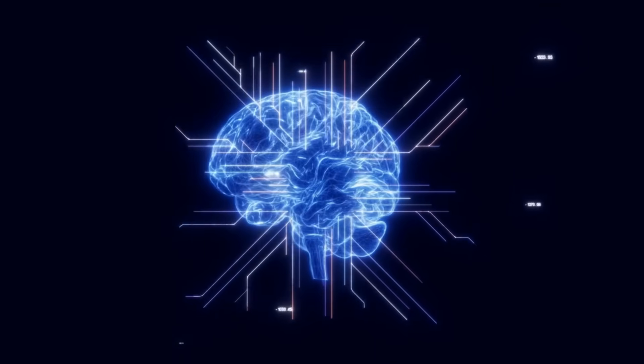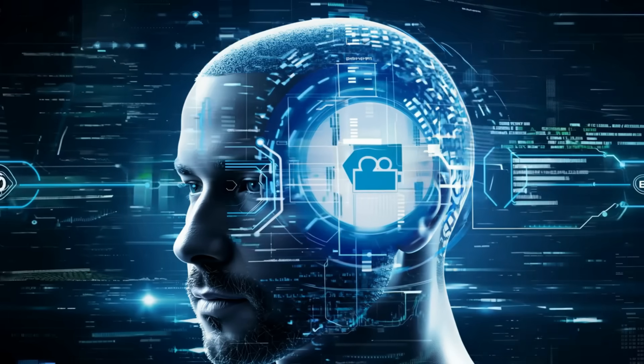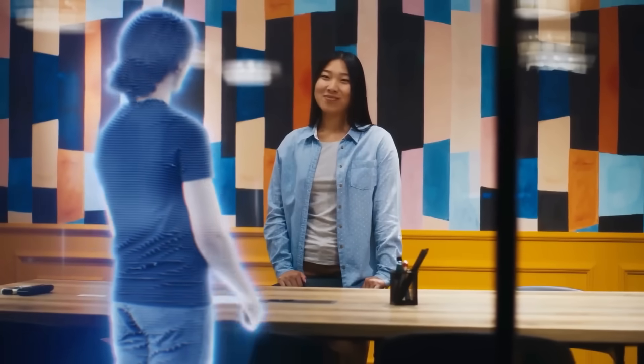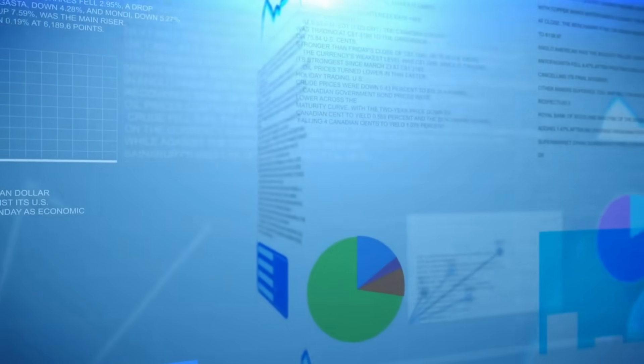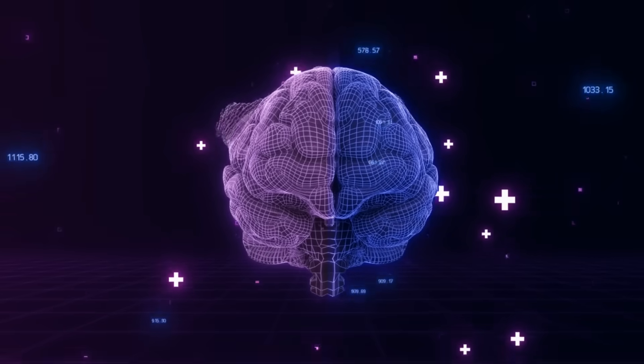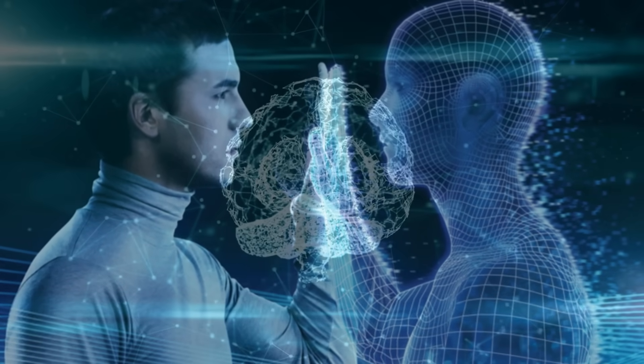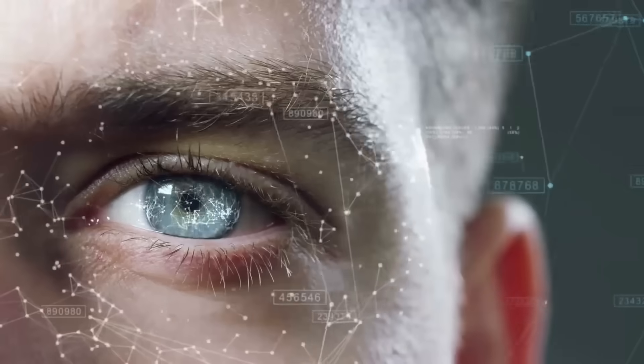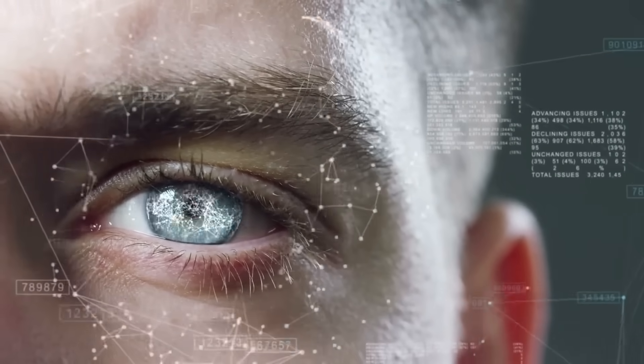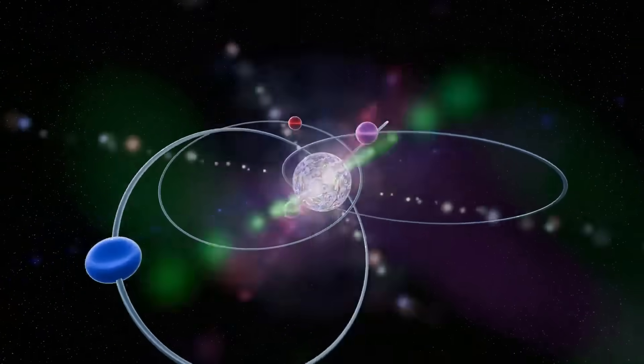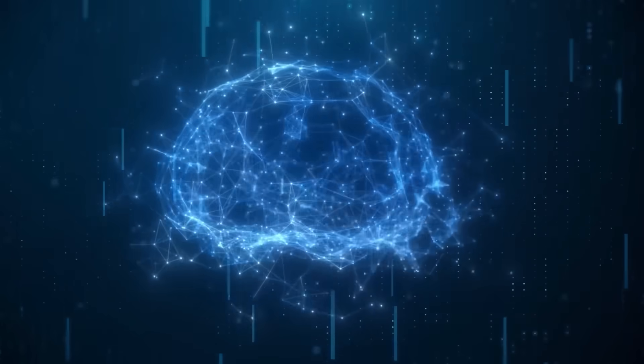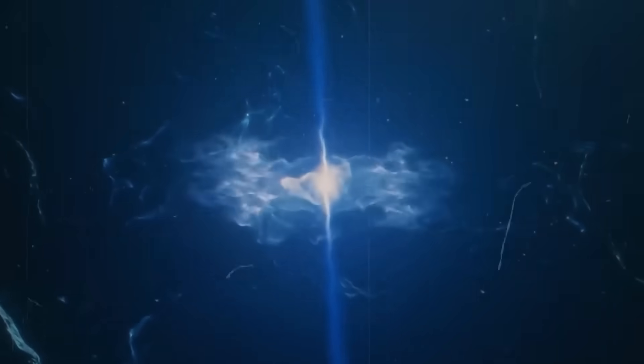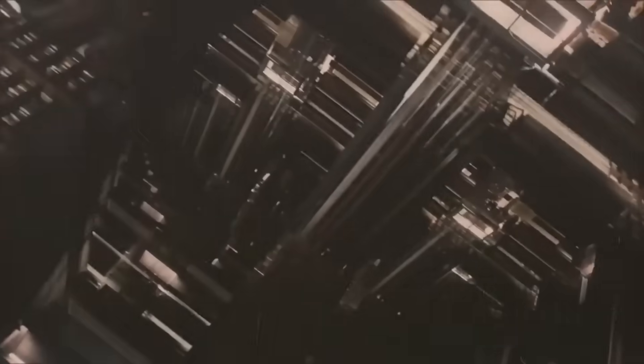At its core, a digital twin is a virtual replica of a physical object or system. In industries like manufacturing, healthcare, and urban planning, digital twins allow for simulations that can predict performance and optimize systems. When applied to a human brain, it becomes a tool for exploring the complex interactions that give rise to thought, memory, and consciousness.